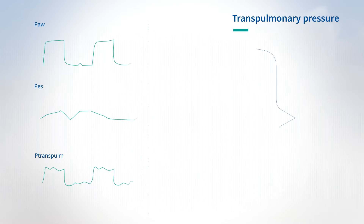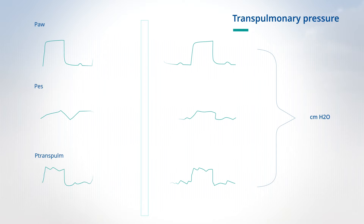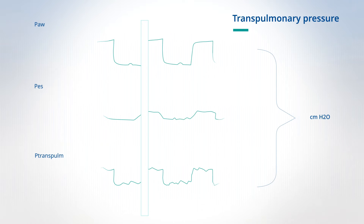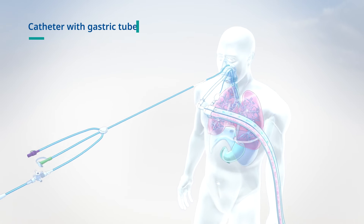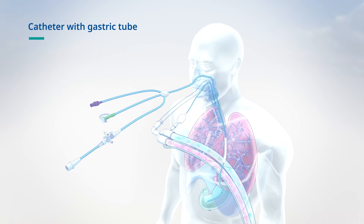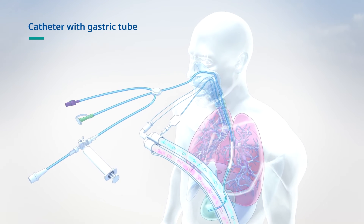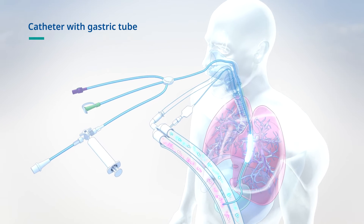Esophageal and transpulmonary pressure monitoring are now considered bedside methods when classical ventilation settings cannot be maintained. This involves placing a modified gastric tube so that pleural pressures can be transmitted to a balloon sensor and measured.